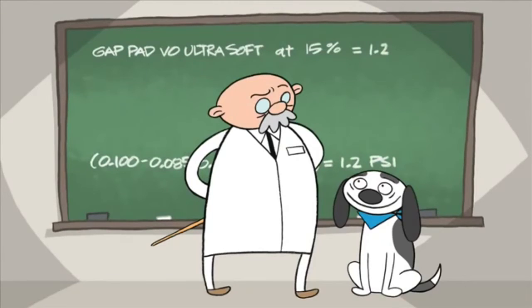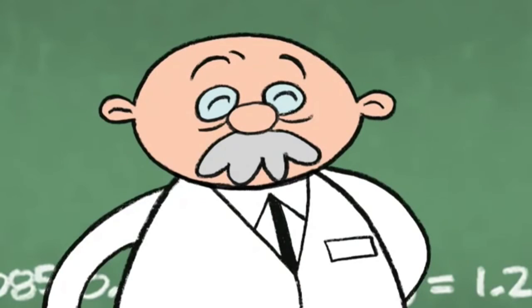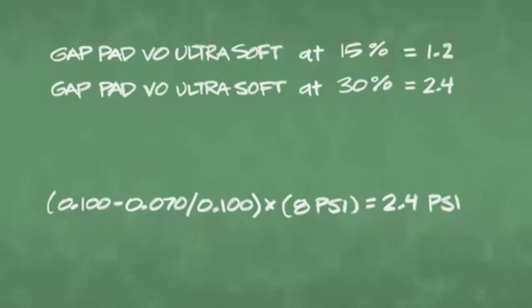So, let's try this once again. But this time, we will deflect the same material 30%. As you can see, this now gives us 2.4 pounds per square inch.